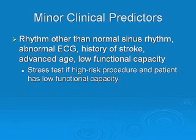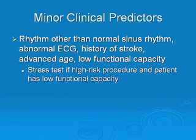Minor clinical predictors are: a rhythm other than sinus such as controlled atrial fibrillation, abnormal EKG such as a bundle branch block, history of a stroke, advanced age, or low functional capacity. For patients with minor clinical predictors, you want to stress test if it's a high-risk procedure and the patient has low functional capacity — so you need both.